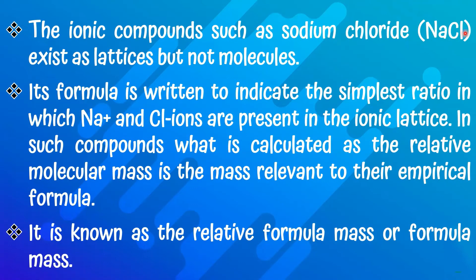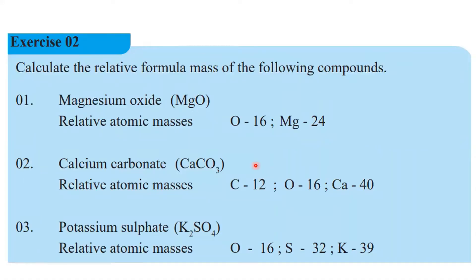Ionic compounds such as sodium chloride, NaCl, exist as lattices but not molecules. The formula is written to indicate the ratio in which Na⁺ and Cl⁻ ions are present in the ionic lattice. In such compounds, what is calculated is the mass relevant to the empirical formula, and it is known as the relative formula mass or formula mass.